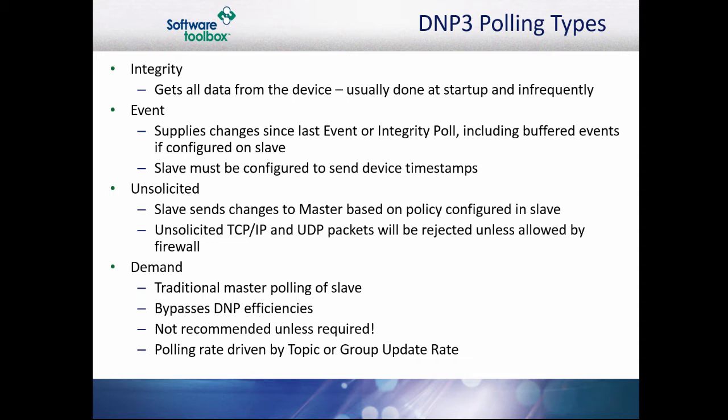Unsolicited messages are sent by the slave on an event or data change if it is configured to do so, without a pull request from the master. The timing and deadband for these messages are handled by the slave. Please note the importance of firewall settings — if you are using unsolicited messages and your firewall does not have the proper exceptions, your unsolicited packets will be rejected.